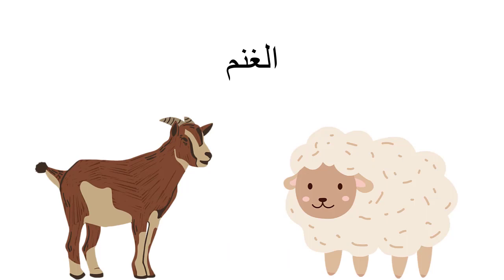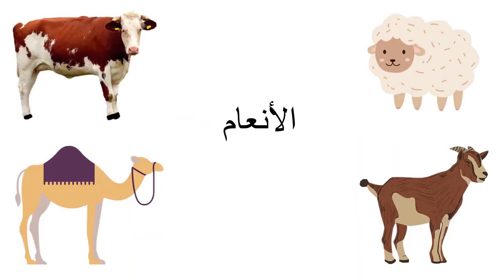الغنم — Al-Ghanam includes both the goats and the sheep, so Al-Ghanam can either be a goat or a sheep. الأنعام — Al-An'am includes all the animals we have seen: the camel, the cow, the bull, the lamb, and the goat. All these animals we call Al-An'am.